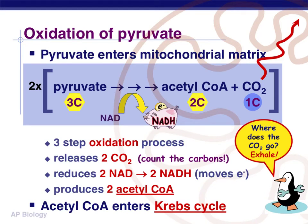So as soon as pyruvate enters the mitochondria, the first thing that's going to happen is we're going to oxidize it. From here on out, everything we're talking about is happening in multiples of two, because glycolysis produces two pyruvates. So pyruvate oxidation is a three-step process, and in one of the steps we're going to take one of those carbons off of pyruvate, and that becomes carbon dioxide, which your body will breathe out or exhale. And the other two carbon molecules form a sugar called acetyl, and we're going to add a compound called coenzyme A to that to make it acetyl coenzyme A.